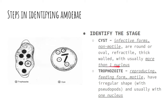For the trophozoite, it is the reproducing or vegetative stage — the feeding form — and it is motile due to the presence of locomotory apparatus. It has an irregular shape, and it contains pseudopods which are used for locomotion. Usually it has one nucleus.